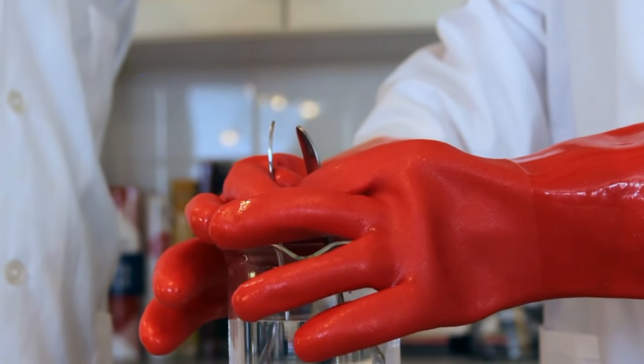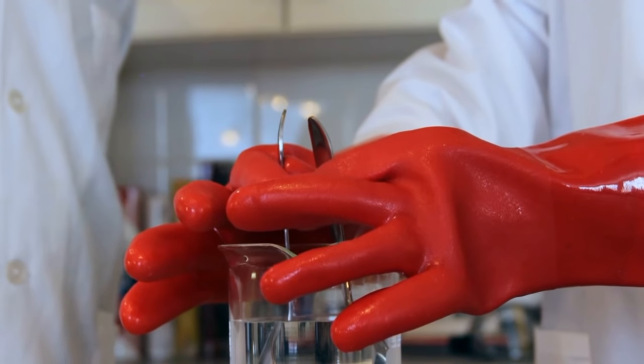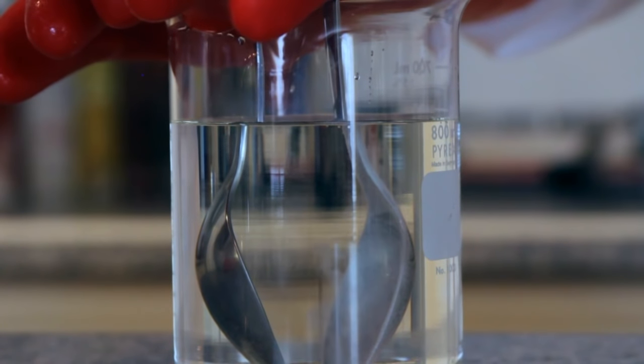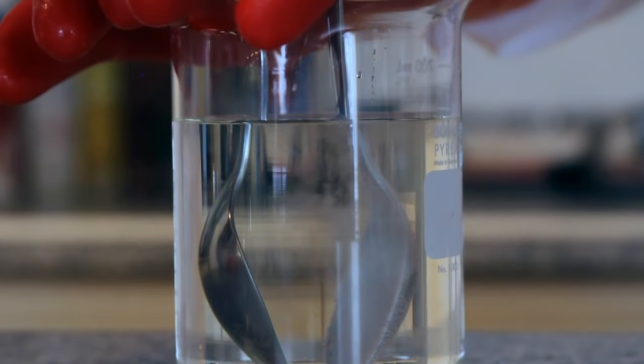The next step is best done with a partner. Take your spoons or your leads and submerge them into the water. Make sure they're not touching. Next, press the battery terminals against the ends of the spoons. Make sure that only one spoon is touching each terminal. As soon as the batteries touch the spoons, you should see bubbles forming on the spoons.